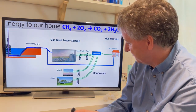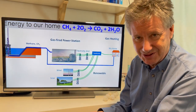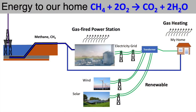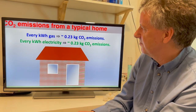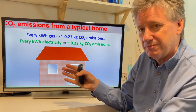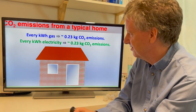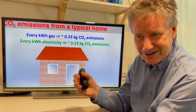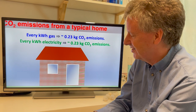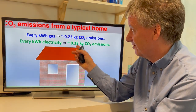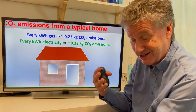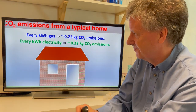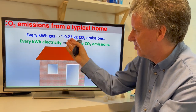Into this mix we also have renewables, which generate electricity without emitting any carbon dioxide at all — absolutely fantastic. So there are emissions from the power station, emissions from the home, but nothing from renewables. When we use gas we typically emit about 0.23 kilograms of carbon dioxide per kilowatt hour, and by chance in 2022 we're emitting a very similar number of kilograms of carbon dioxide per kilowatt hour of electricity.